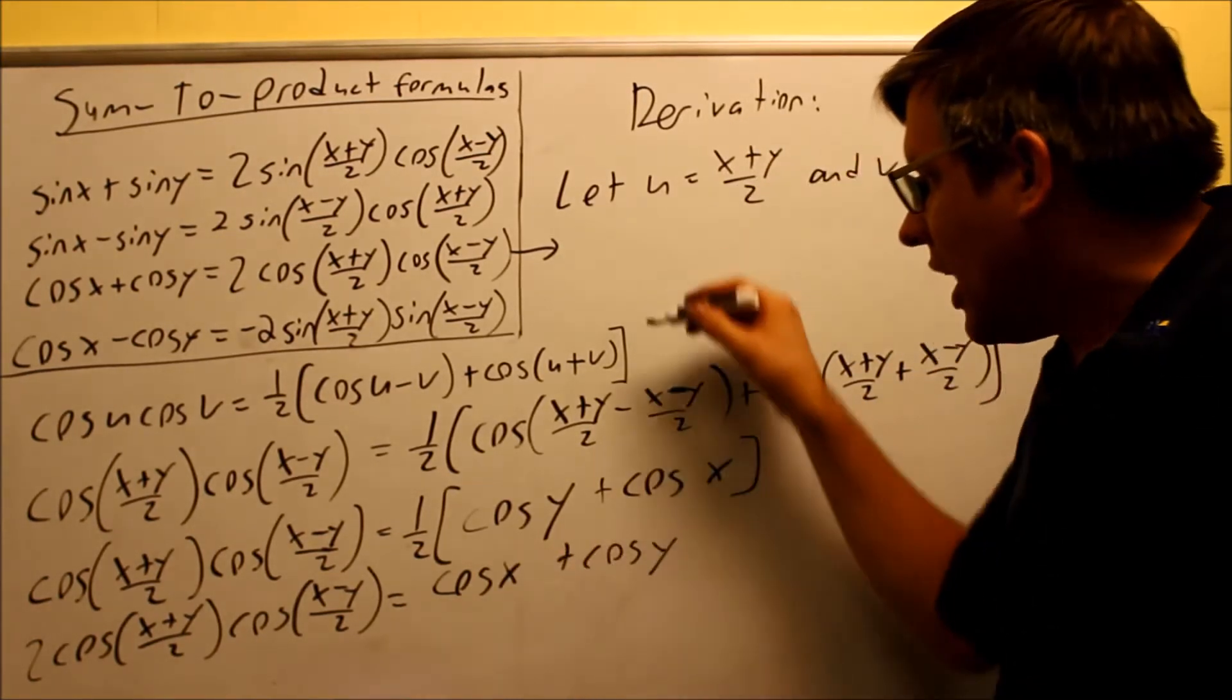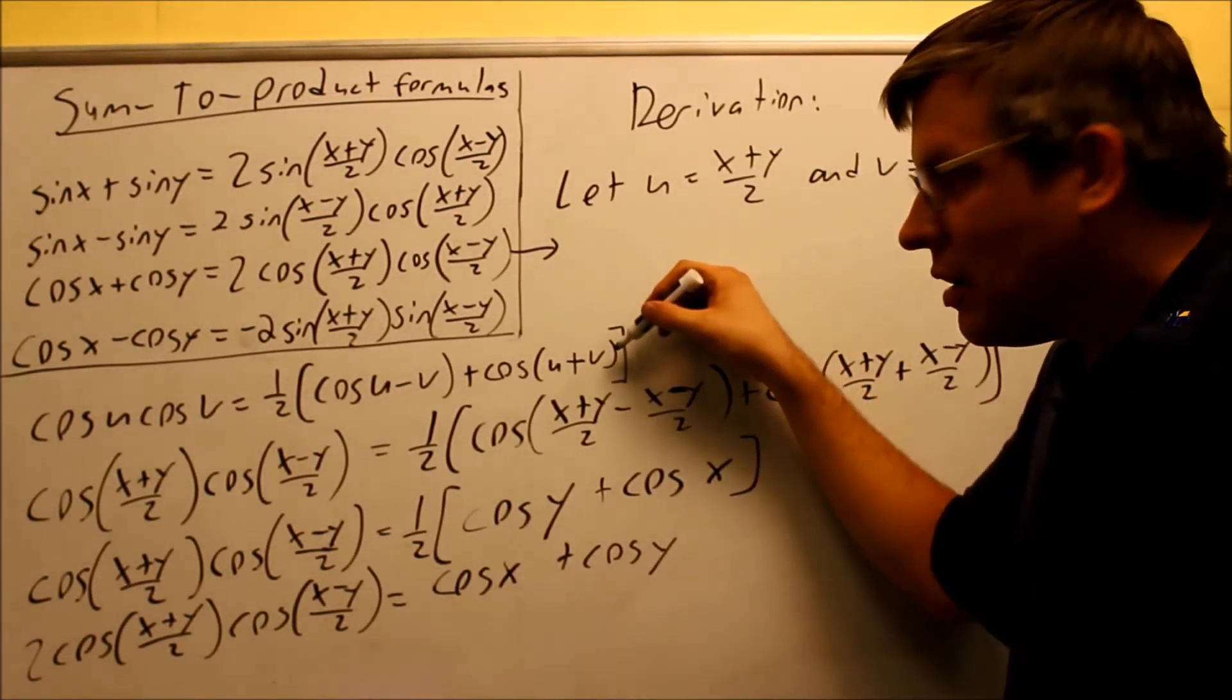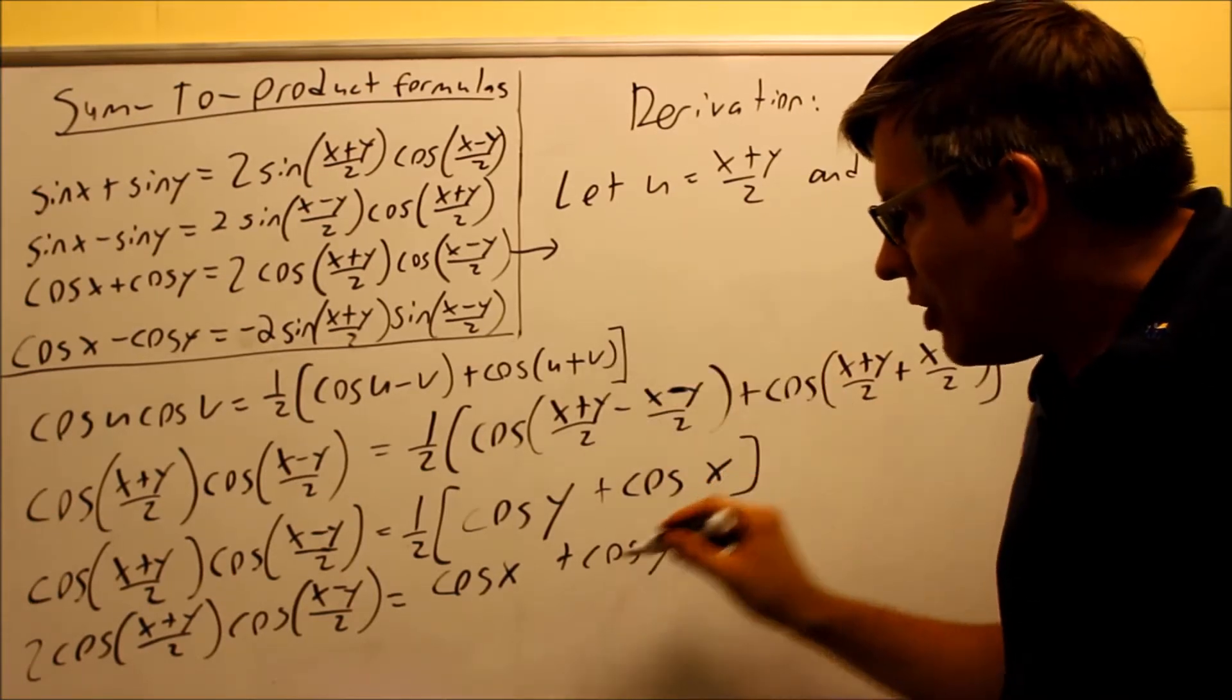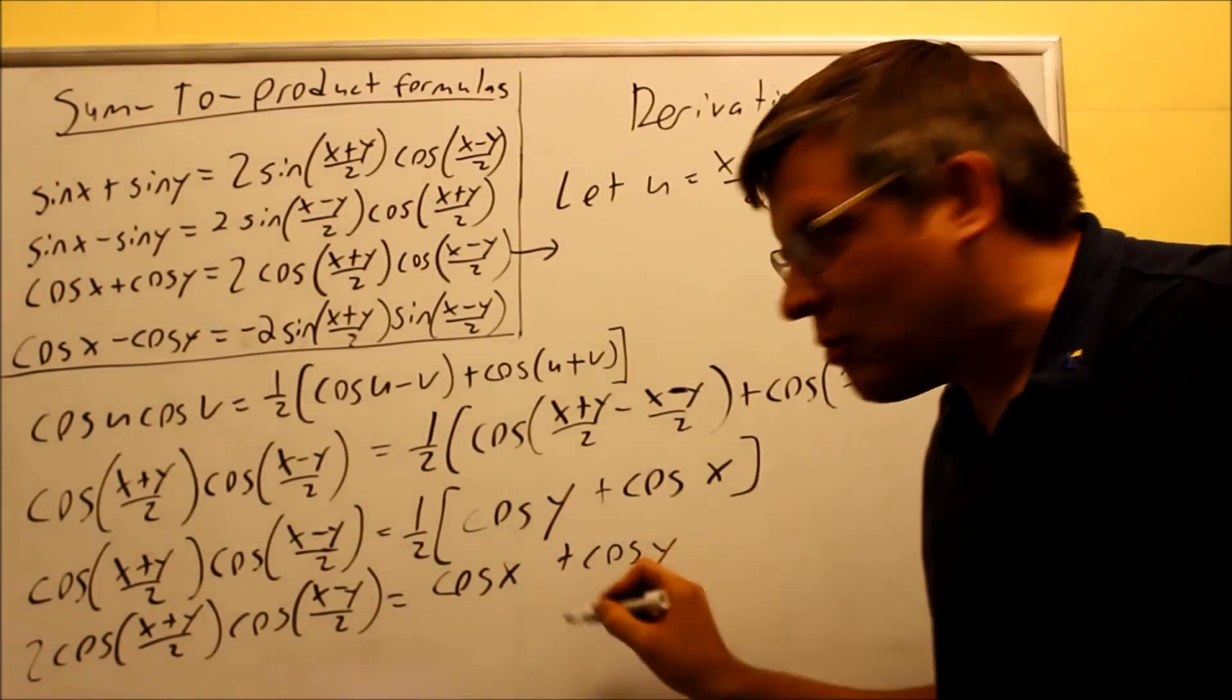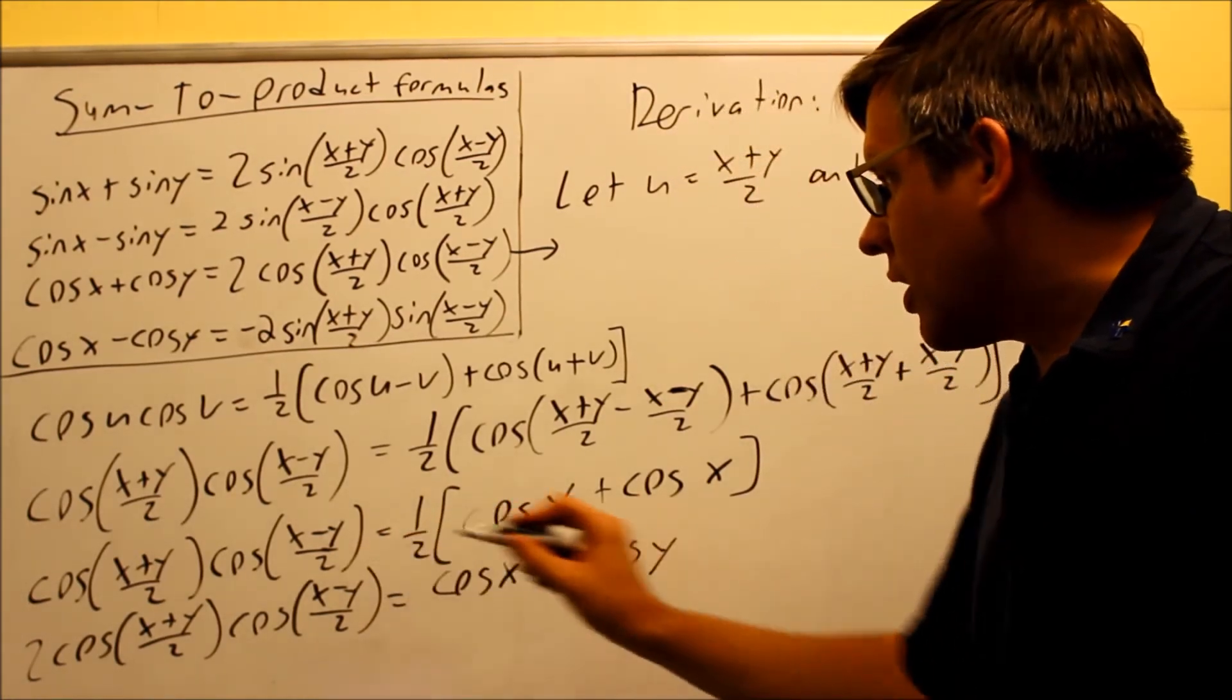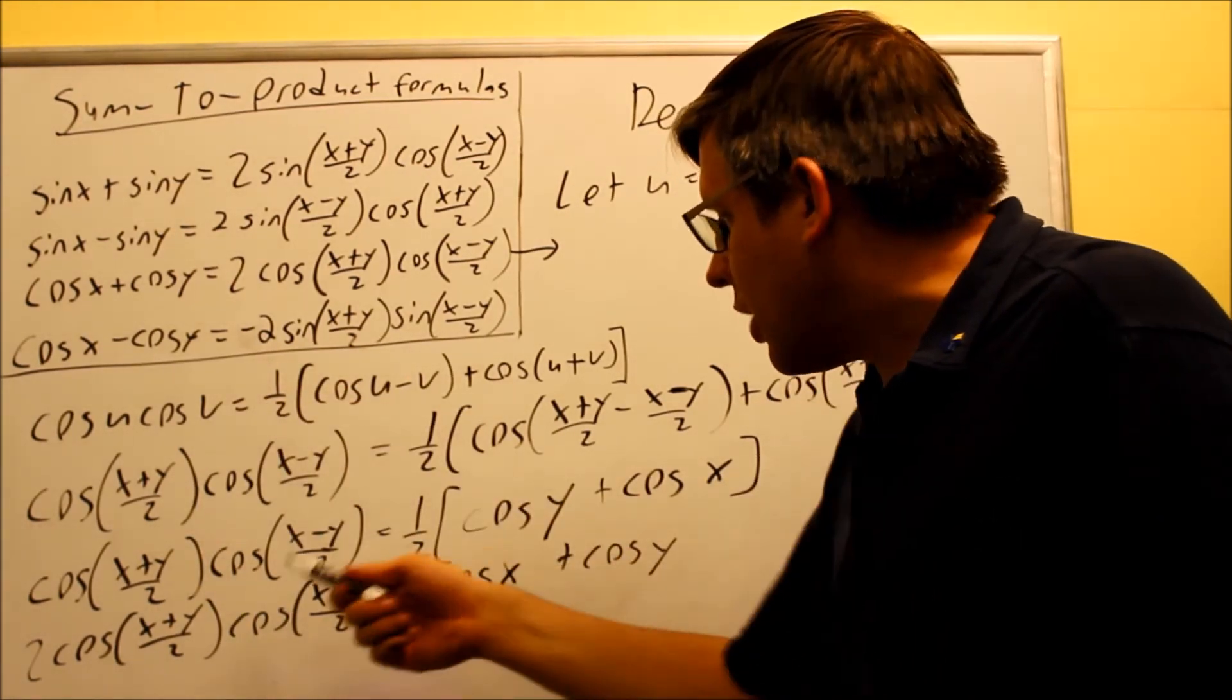So now here it is. I've shown now how to get from the product-to-sum formula, and we've now gone all the way through the work, and we've shown that we can make it look like the sum-to-product. So we have product-to-sum, and sum-to-product.